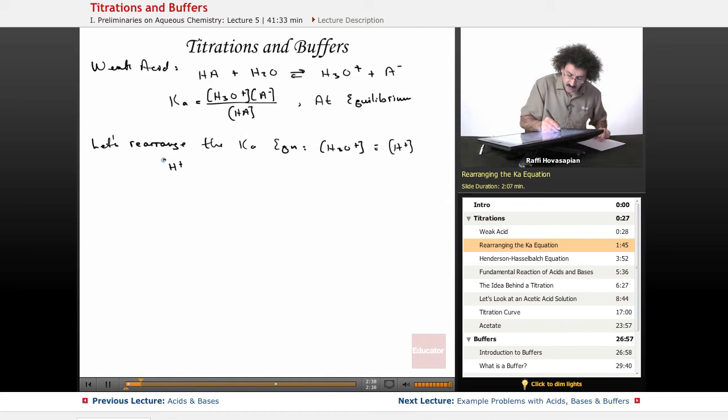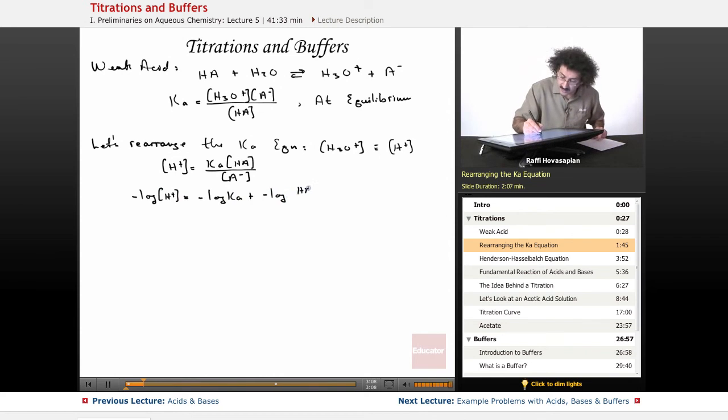Now I'm going to end up taking the logarithm, the negative logarithm of both sides. So I've got negative log of H plus equals negative log of Ka plus the negative log of HA over A minus.